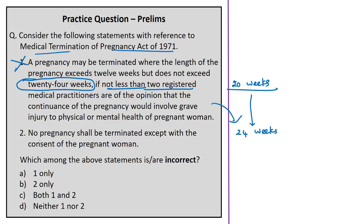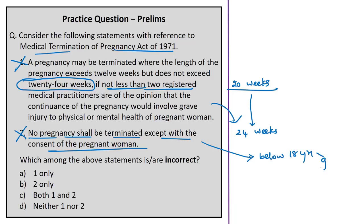Statement 2 states: 'No pregnancy shall be terminated except with the consent of the pregnant woman.' This is also incorrect — if the woman is below 18 years of age, consent is obtained from her guardian; and if she has attained 18 years but is a lunatic, consent is obtained from her guardian. These provisions are mentioned in Section 4A of the MTP Act. Both statements are incorrect — the question asks for incorrect statements, so the correct answer is Option C.